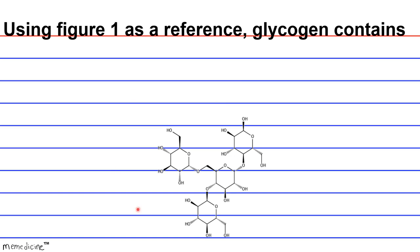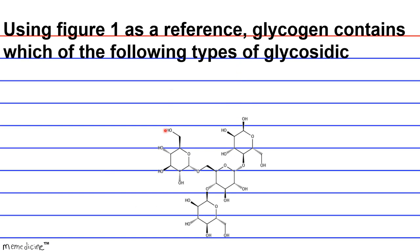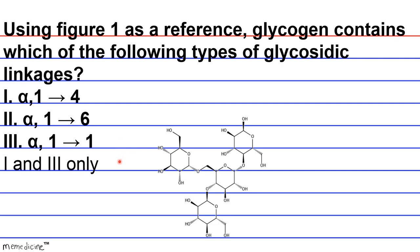Using figure 1 as a reference, glycogen contains which of the following types of glycosidic linkages? Alpha-1,4, alpha-1,6, or alpha-1,1? The possible answer choices are A, 1 and 3 only, B, 1 only, C, 1 and 2 only, or D, 2 and 3 only?